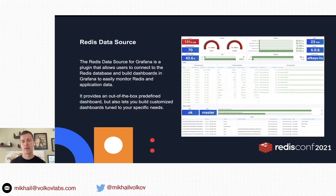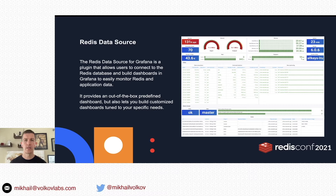One of the predefined dashboards provides information about the Redis database. You can see operations per second, network, memory information, client connections, slow log information, common statistics, and if your Redis database supports cluster, you can see the cluster health and nodes.